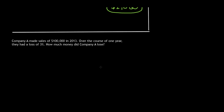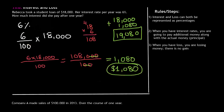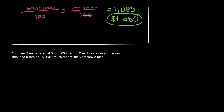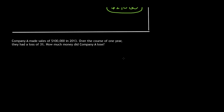Our steps are pretty much the same. Step one: interest and loss can both be represented as percentages. They lost three percent, so three percent written in fraction form is three over one hundred, because percent is part of one hundred. We're going to multiply this by one hundred thousand, which is the amount of sales they made.